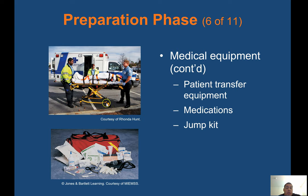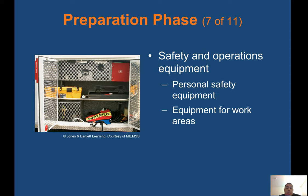The stretcher and jump bag are essential — every call you bring the jump bag containing everything you need. Safety and operations equipment includes personal safety equipment and equipment for work areas. The outside compartment holds tools for the ambulance, not for the patient — road flares, safety vests, and electrical cords.